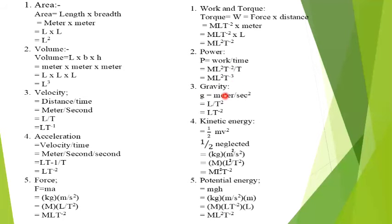We use gravitational acceleration g. Gravity has no formula but it has a unit: meter per second squared. Meter is capital L, second symbol is capital T. Since the power is positive two in the denominator, it becomes minus two. The dimension of gravity is LT⁻².